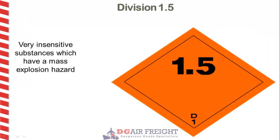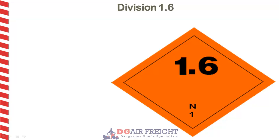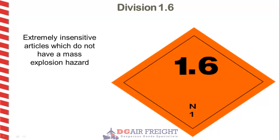Division 1.5 are very insensitive explosives that have a mass explosion hazard. They are so insensitive that there is little probability of initiation under normal conditions. This division is often referred to as blasting agents. Division 1.6 are extremely insensitive explosives that do not have a mass explosion hazard. Substances that demonstrate a negligible probability of accidental initiation.